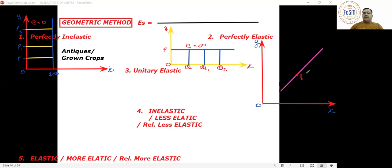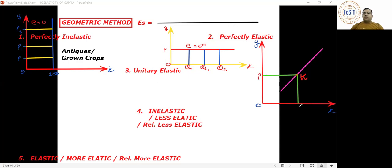Point K is visible. At this point, we need to measure elasticity. First identify: what is your quantity supplied at point K? It is OQ. And what is your price? It is OP.